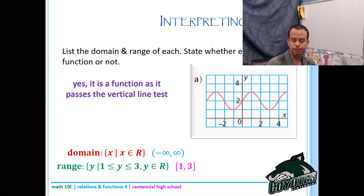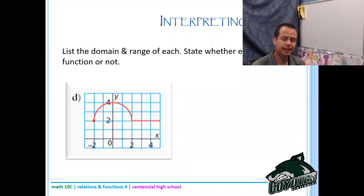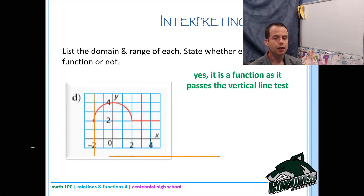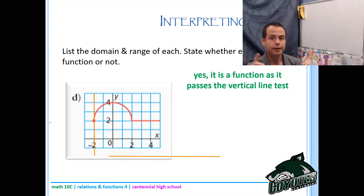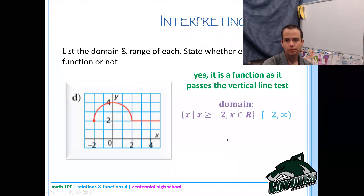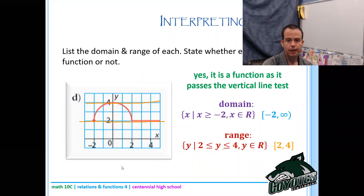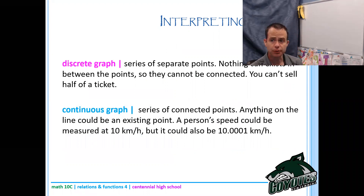This graph is also a function. For the domain, it starts at negative 2 and heads right, so X is greater than negative 2 and X is a member of the reals, or in interval notation negative 2 to infinity with a curved bracket at negative 2. For the range, the bottom is at 2 and the top is at 4, so in set-builder notation 2 ≤ Y ≤ 4 where Y is a member of the reals, or interval notation [2, 4] with square brackets.